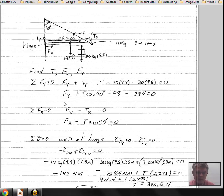In the X direction, we have F of X from the wall pushing outward and we have T sub X, component of the tension that's pushing into the wall. There are no other X forces.